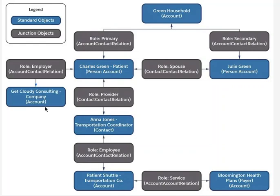On the middle left-hand side, Get Cloudy Consulting Company — it's an account that does consulting for the patient. It has the junction object with a role of employer — account contact relationship. Same as here: account, role. There are junction objects out of the base objects.